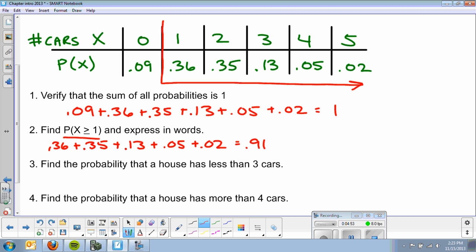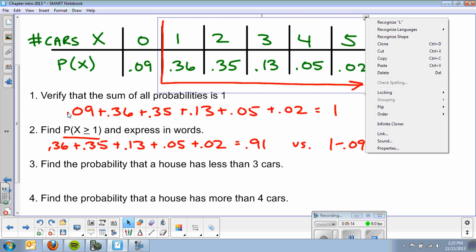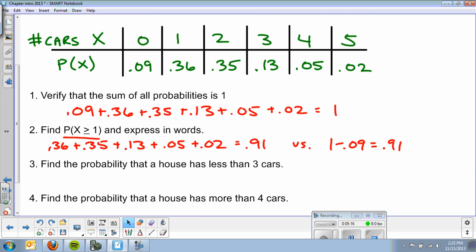So, I'm basically going to add 0.36 plus 0.35 plus 0.13 plus 0.05 plus 0.02 and get 0.91. Now, some of you are thinking there was a much easier way for me to do that. I could have just subtracted 0.09 from one and got the same 0.91. And, again, what that means in words is that the probability of X is greater than or equal to one. I can also say what's the probability that a house has at least one car. Okay. So, that's one or more.